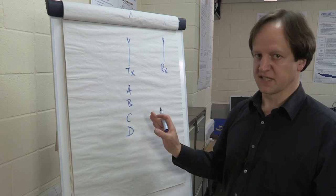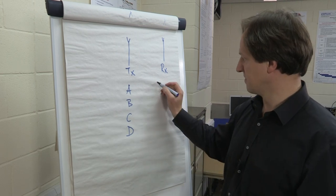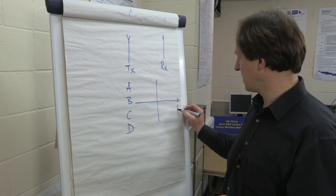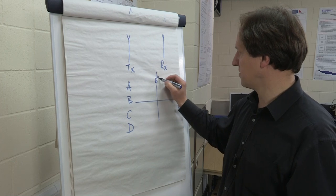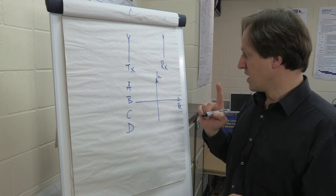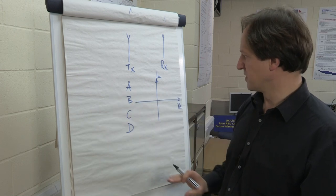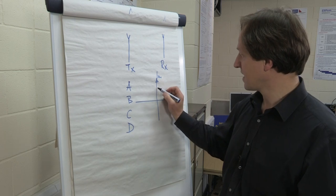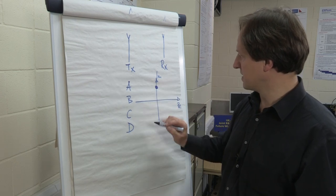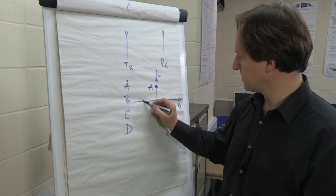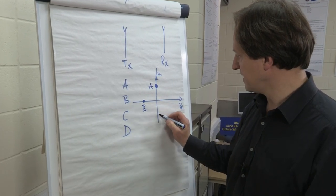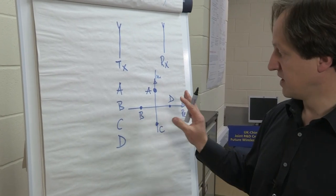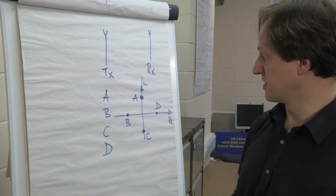The way we would transmit that is using signals. Let's assume we have a signal space made of a real part and an imaginary part. What we would do now is we would link these symbols to so-called constellation points in that complex diagram. We would allocate this point as symbol A, symbol B, C, and D.